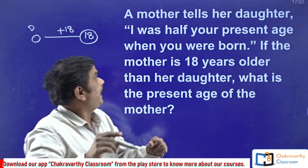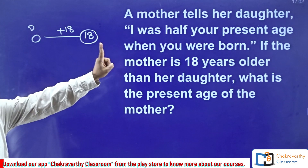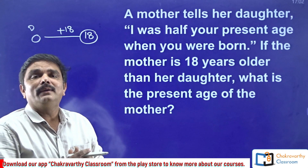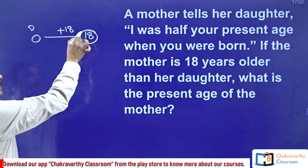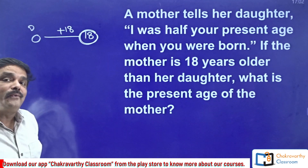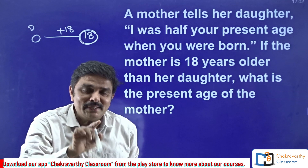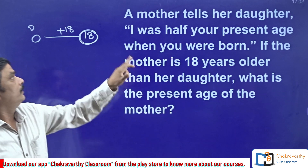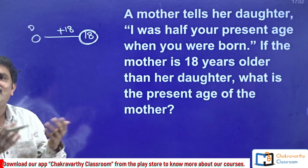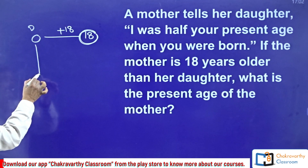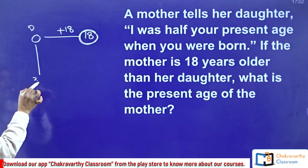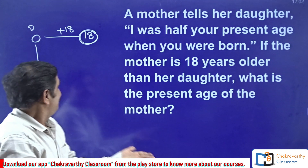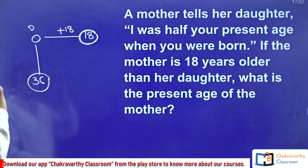According to the statement, mother is saying: 'I was half your present age when you were born.' So, this age of the mother — 18 years — is half of the daughter's present age. That means daughter's present age is double this age. Obviously, daughter's present age is 18 into 2, that is 36 years. As simple as this. Daughter's present age is 36 years.